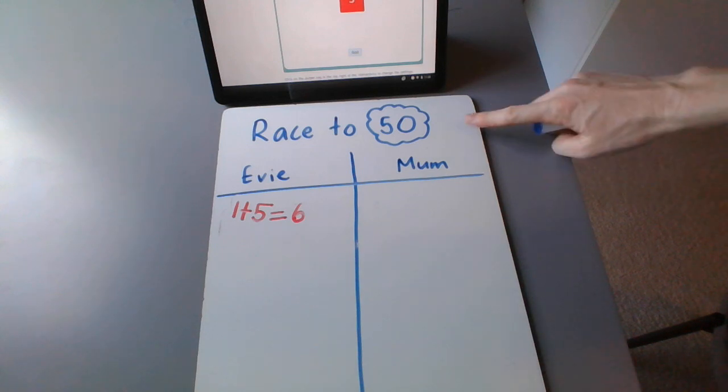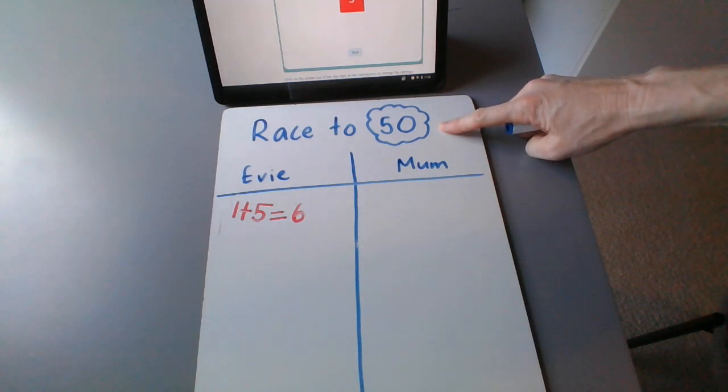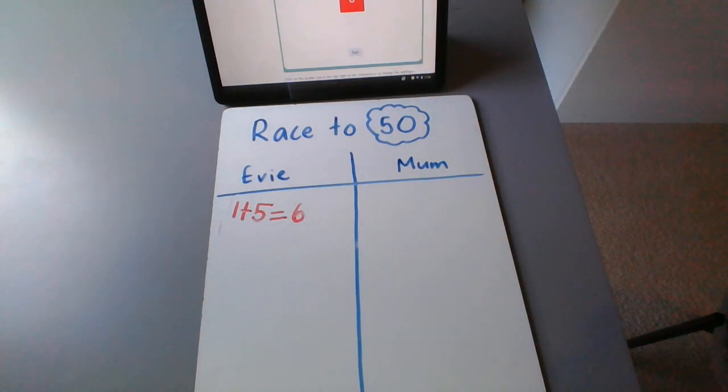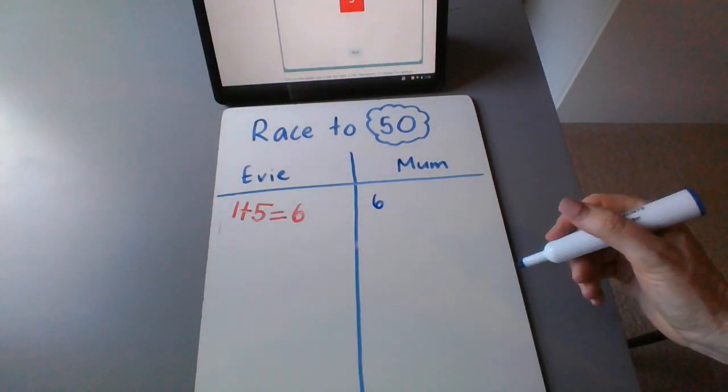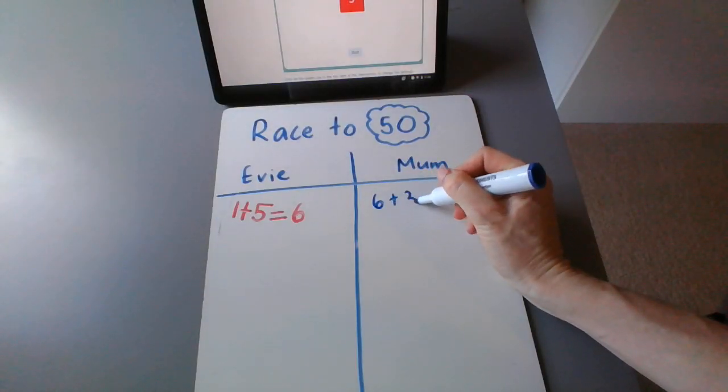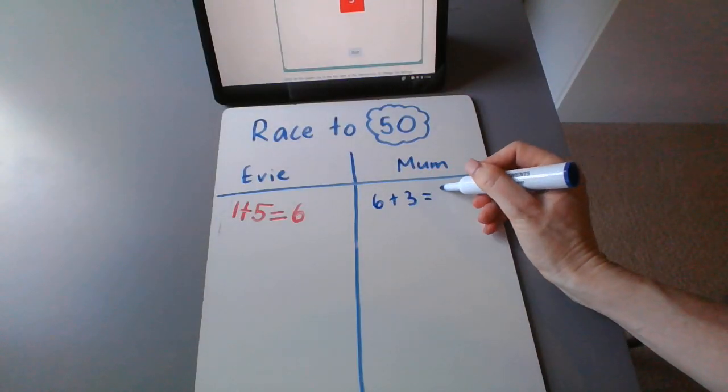The aim of the game is to get to 50. The first person to end up on 50 wins. So now it's my turn. I'm going to roll. I've got a six, so I'm going to write that in my column. Six plus three, yes. And I know six and three is nine.